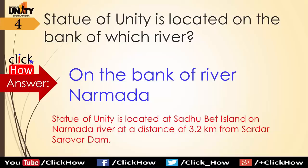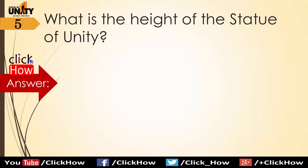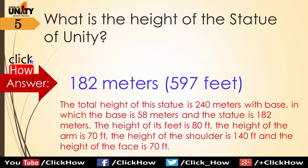Statue of Unity is located at Sadhu Bet Island on the Narmada River at a distance of 3.2 km from Sardar Sarovar Dam. Question 5: What is the height of the Statue of Unity? Answer is 182 m, which means 597 feet. The total height of this statue with base is 240 m, in which the base is 58 m and the statue is 182 m. The height of its feet is 80 feet, the height of its arm is 70 feet, and the height of the shoulder is 140 feet.